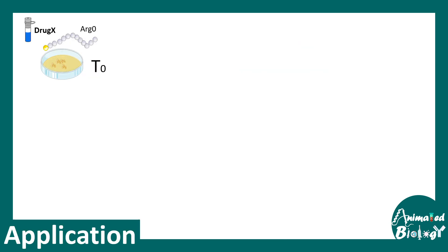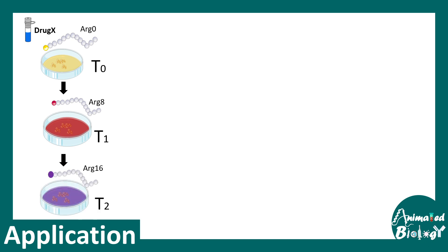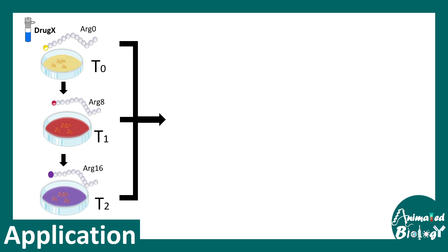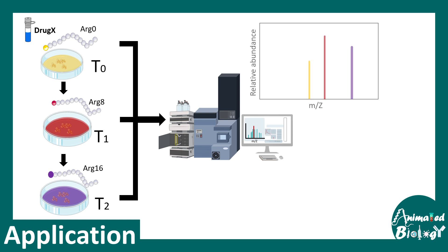As another application, consider a cell transitioning between developmental time points T0, T1, and T2. To understand protein turnover — how proteins are being produced and degraded — samples are taken at each time frame. At T0, cells are labeled with arginine 0; this is washed out and replaced with arginine 8 at T1; and eventually replaced with arginine 16 at T2. These three distinct molecular weights can be quickly distinguished in mass spectrometry analysis.